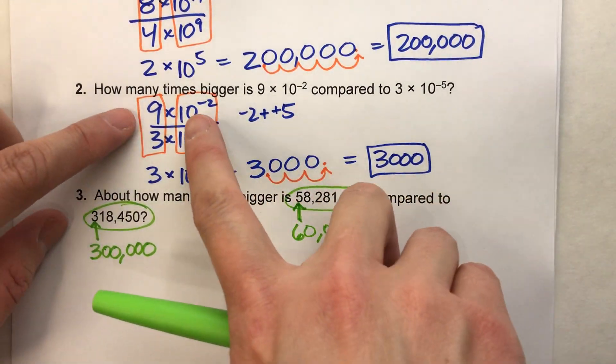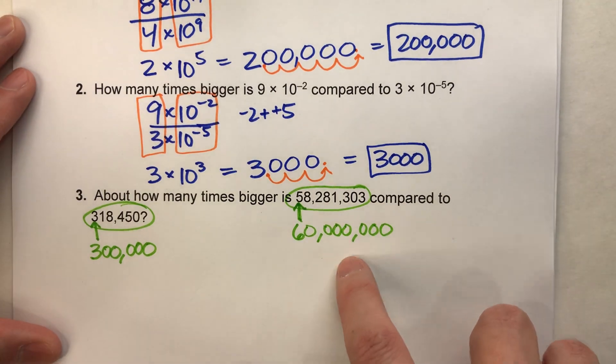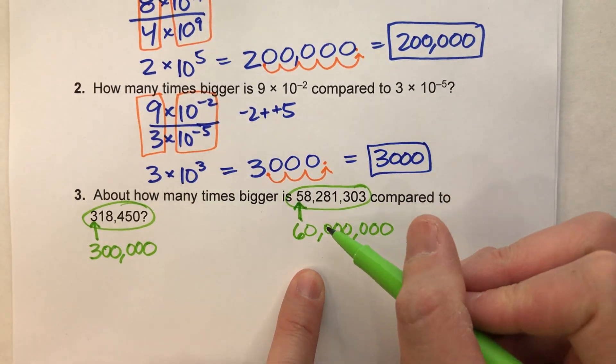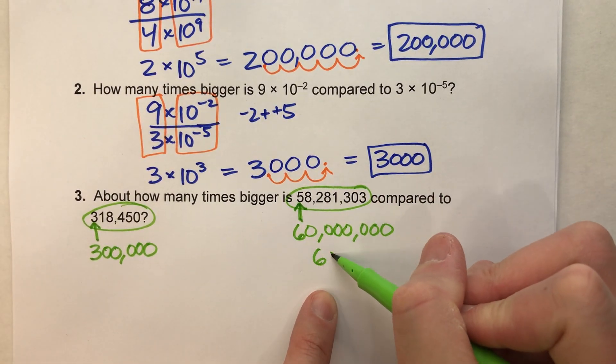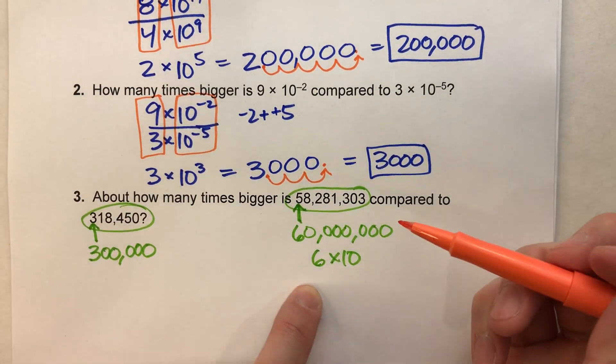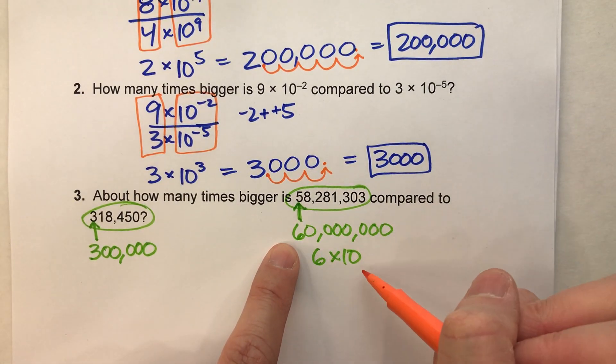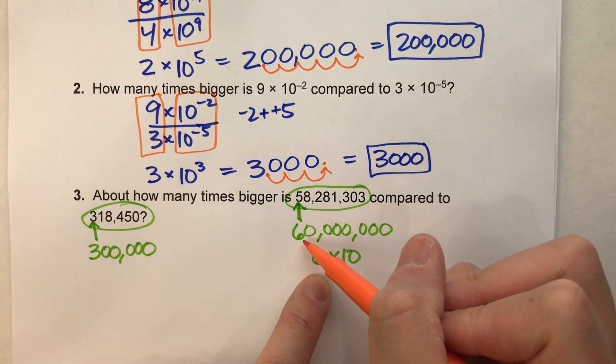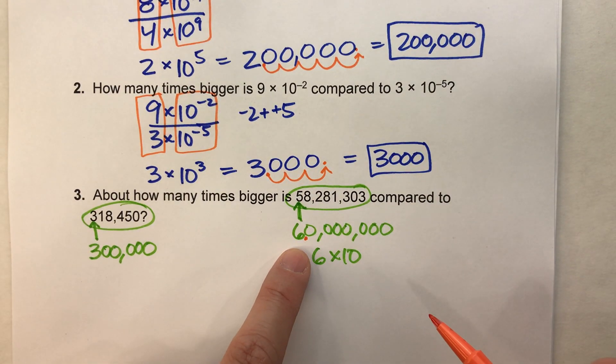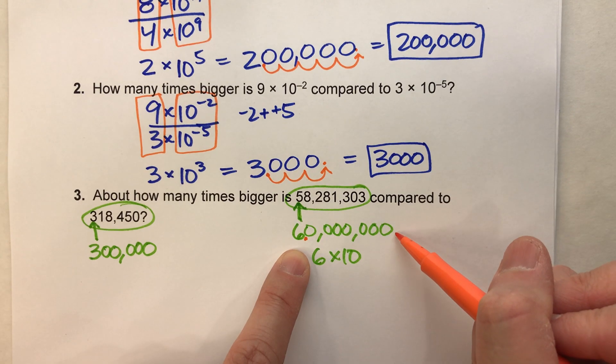And just like before, it was nice to have a single digit times the power of 10. So let's do that for these two also. 60,000 is really 6 times 10 to some power. However, let's see, if I want to make this in this format, a six would have the decimal point there, but of course we have 60 million, so we want the decimal over there.